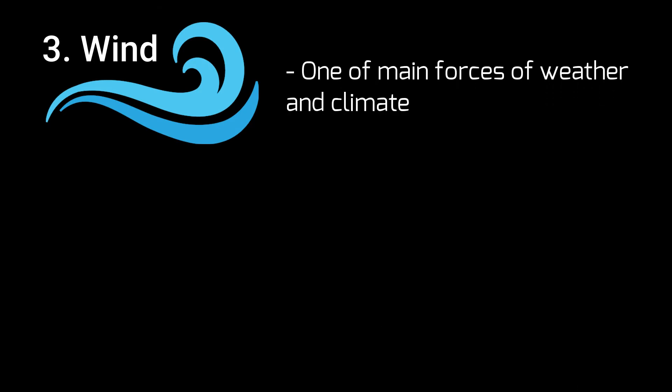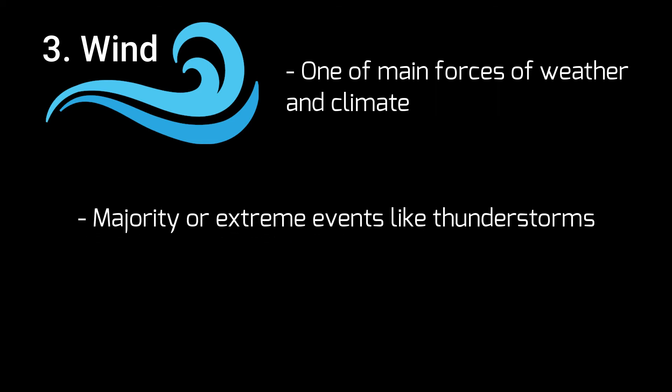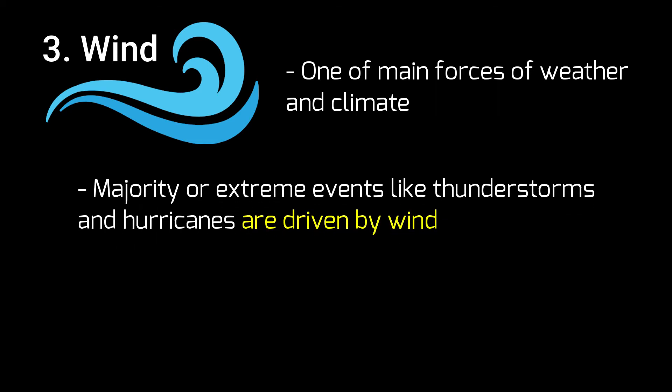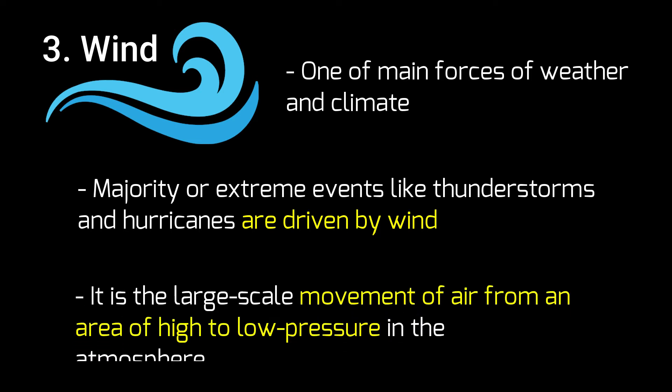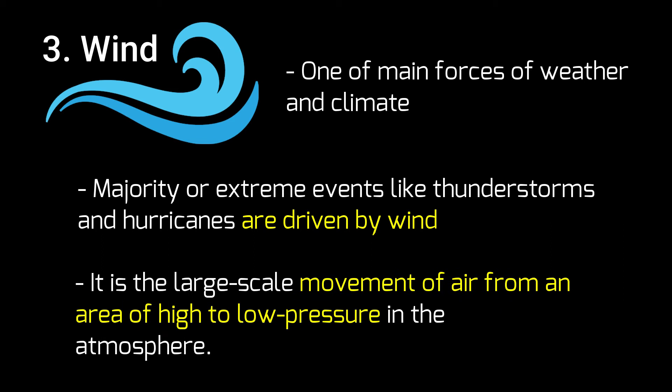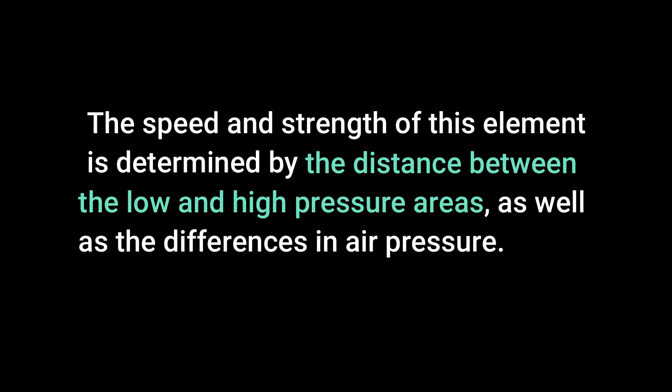Wind — the movement of air — is one of the main forces of weather and climate. The majority of extreme events like thunderstorms and hurricanes are driven by wind. Wind is the large-scale movement of air from an area of high to an area of low pressure in the atmosphere. The speed and strength of this element is determined by the distance between the low and high pressure areas, as well as the differences in air pressure.